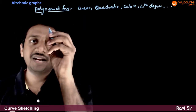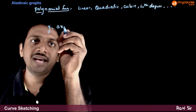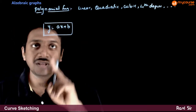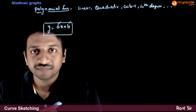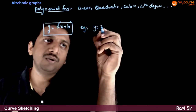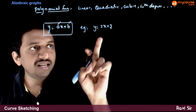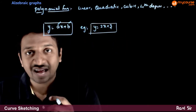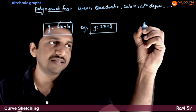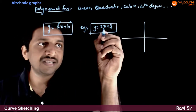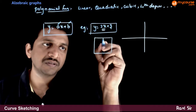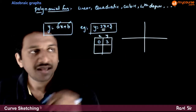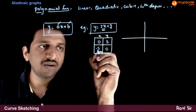First let us try to understand the linear graph. If you have y is equal to a linear function ax plus b, the graph depends on the numbers a and b. For example, if you have y is equal to 2x plus 3, we know that the first degree polynomial has a graph which looks like a straight line. The easiest way to draw this graph is to first put x is equal to 0 and try to get two points. So put x equal to 0, you see that you get y is equal to 3. And put y equal to 0, you see that you get x equal to minus 3 by 2.